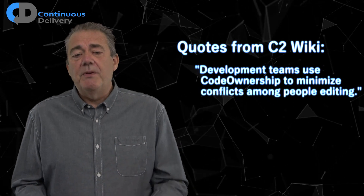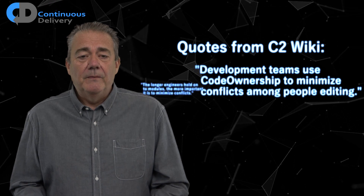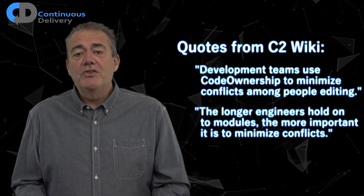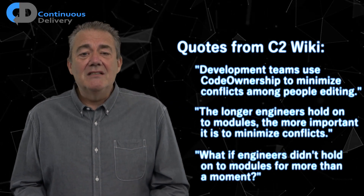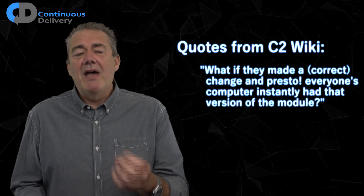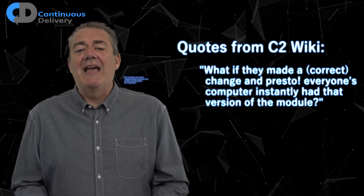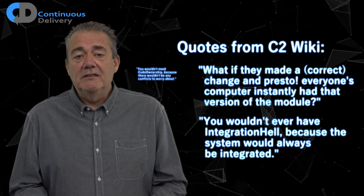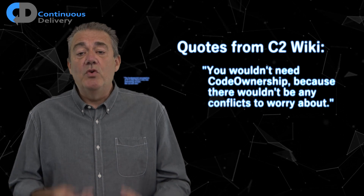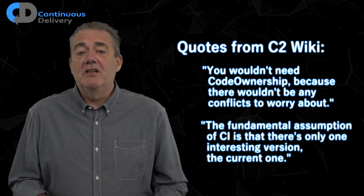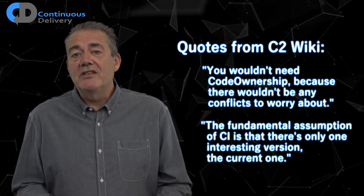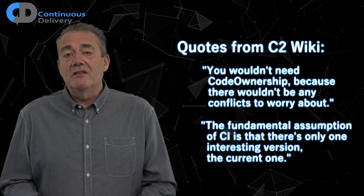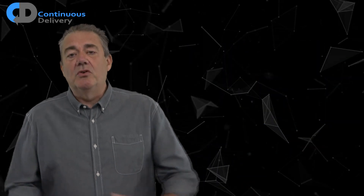Development teams use code ownership to minimise conflicts among the people editing the code. The longer engineers hold on to modules, the more important it is to minimise conflicts. What if engineers didn't hold on to modules for more than a moment? What if they made their correct change and presto, everyone's computer instantly had that version of the module? You wouldn't ever have integration hell because the systems would always be integrated. You wouldn't need code ownership because there wouldn't be any conflicts to worry about. The fundamental assumption of continuous integration is that there is only one interesting version — the current one. CI isn't about the tools, it's about thinking about change differently.